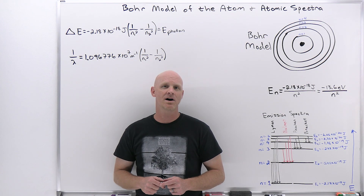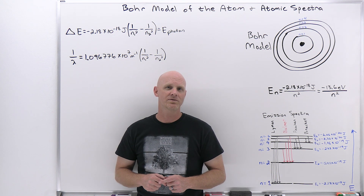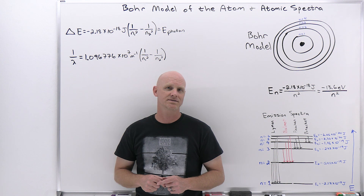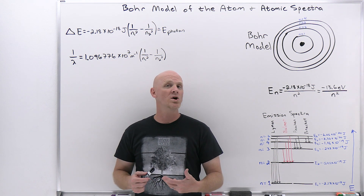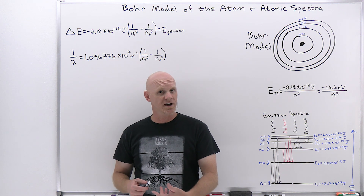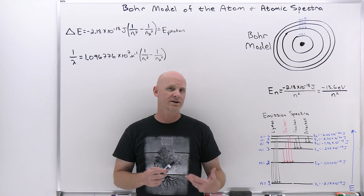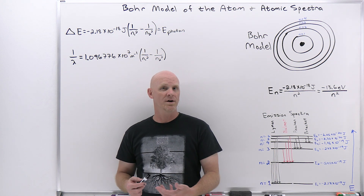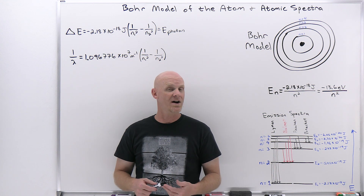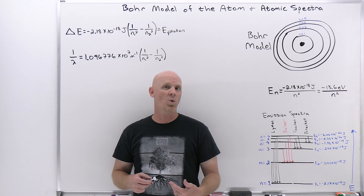The Bohr model of the atom and atomic spectra will be the topics of this lesson in a general physics playlist, which when complete will cover a full year of university algebra-based physics. In the last lesson we saw that Planck and Einstein came up with quantum theories, saying that energy was quantized, to explain blackbody radiation and the photoelectric effect. In 1913, Niels Bohr made his contribution with a quantum theory for the hydrogen atom, saying that electron energies in an atom were similarly quantized.